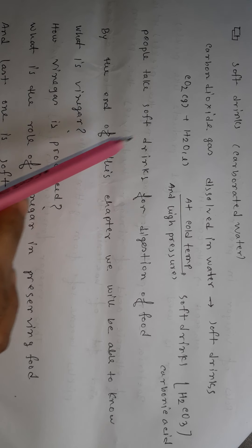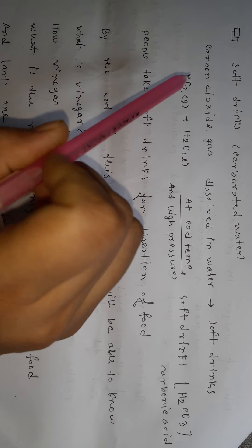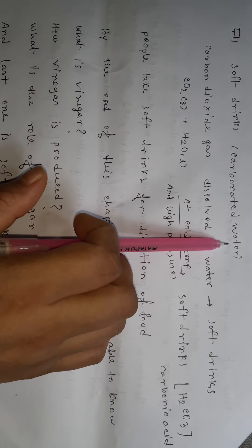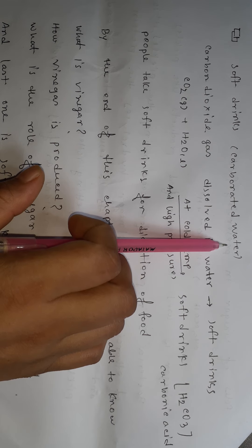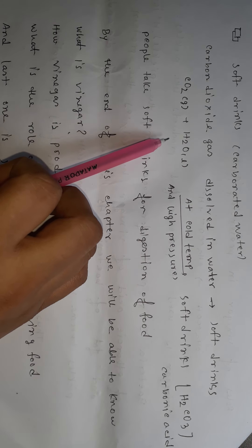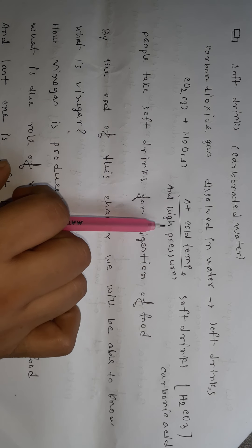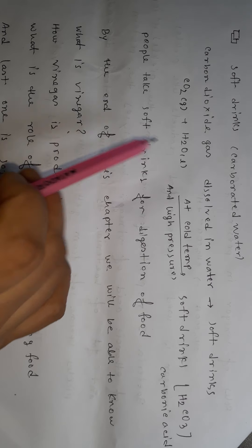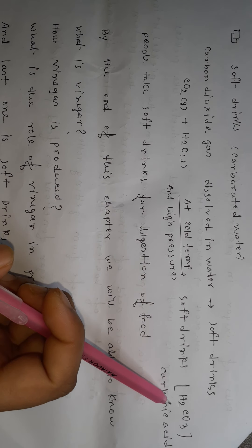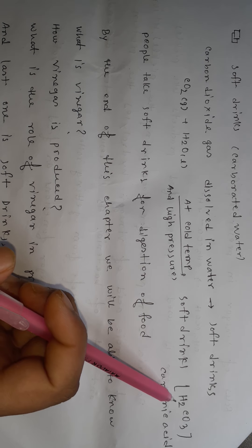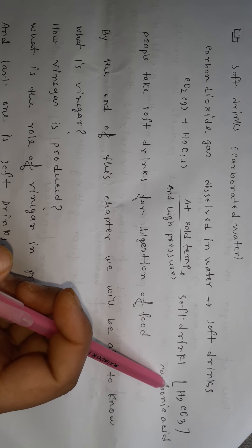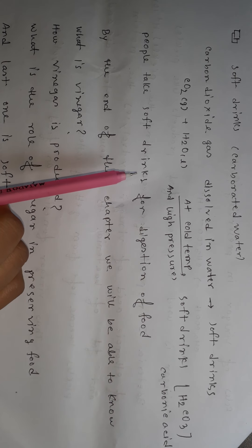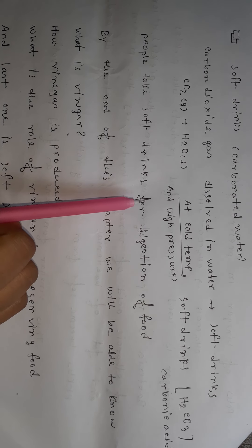Our last topic is soft drinks. Soft drinks are carbonated water. We produce soft drinks from carbon dioxide dissolved in water at cool temperature and high pressure. Carbon dioxide gas dissolves in a large amount of water and produces soft drinks and carbonic acid. The chemical formula of carbonic acid is H2CO3.